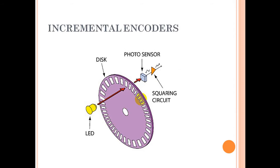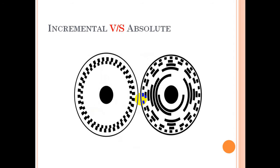But you cannot identify exactly where the servo motor currently is. You can see the difference between incremental and absolute: absolute has specific patterns on the disc that make it different from incremental.